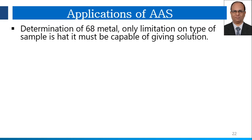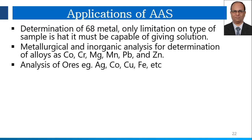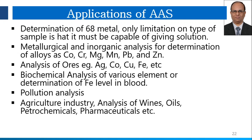The applications of AAS: it can be used for the determination of 68 metals; the only limitation is that the sample must be capable of giving a solution when using flame techniques. For metallurgical and inorganic analysis, it determines alloys like cobalt, chromium, magnesium, manganese, lead, and zinc. It can also be used for analysis of ores like gold, cobalt, copper, and iron. For biochemical analysis, it can detect iron levels in blood. It is also used in environmental systems for pollution analysis, in agriculture, wine industries, oils, petrochemicals, and pharmaceuticals.